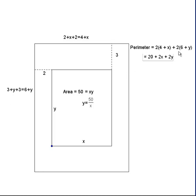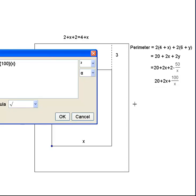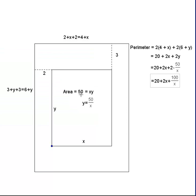We do a little algebra, a little distribution. And then we remember that we actually know what y is. Y is 50 over x. So we can replace y with 50 over x. And simplifying once again, we get 20 plus 2x plus 100 over x.